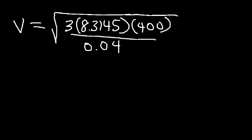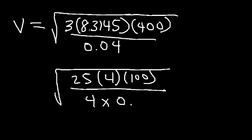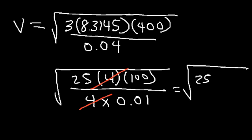3 times 8 is 24, and 3 times 0.3 is about 0.9, so 3 times 8.3145 is a little bit higher than 24.9 — let's say about 25. And 400 is basically 4 times 100, and 0.04 is 4 times 0.01, so we can cancel the 4s. What we now have is the square root of 25 times 100 divided by 0.01.